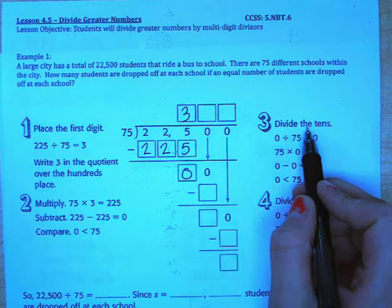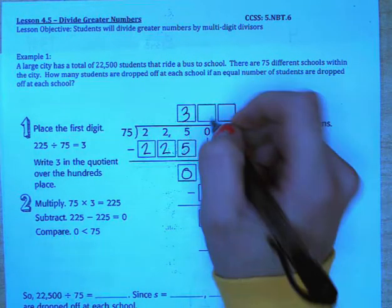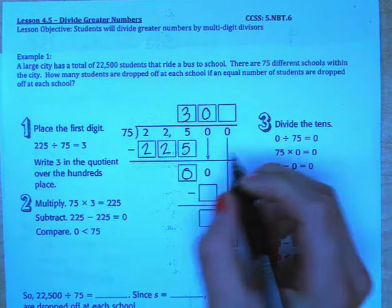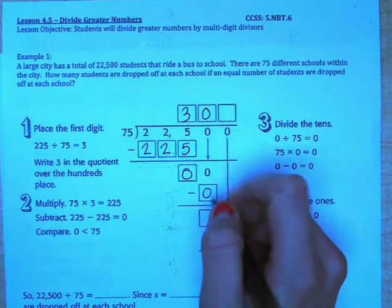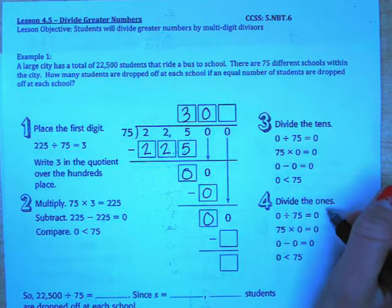Step 3 is to divide the tens. Brought down our 0. 0 divided by 75 equals 0. So we're going to put a 0 in the quotient. 75 times 0 is 0 and subtract 0 minus 0 is 0. Complete the same steps for the ones place.